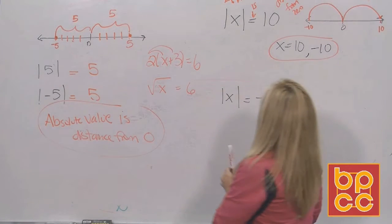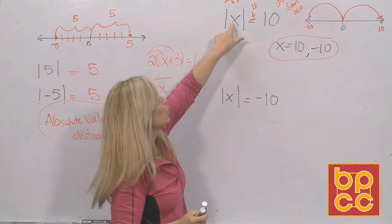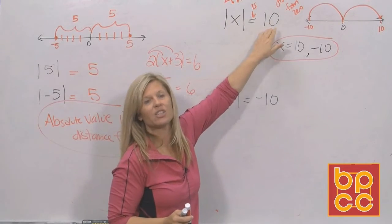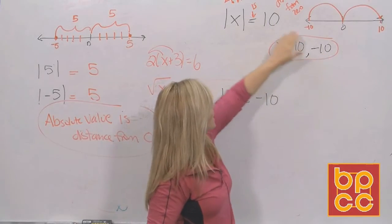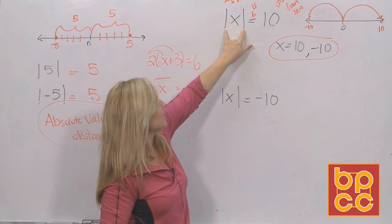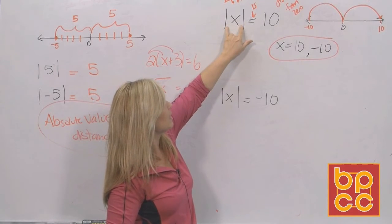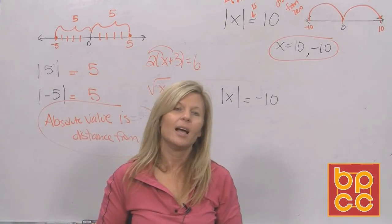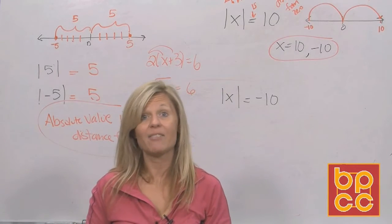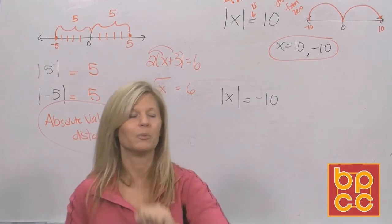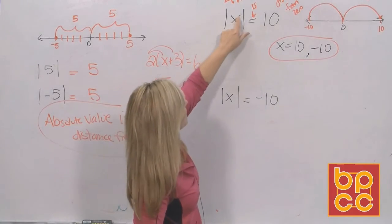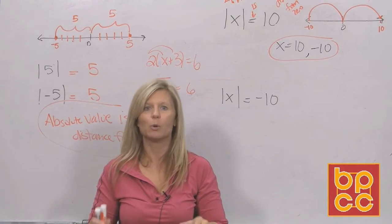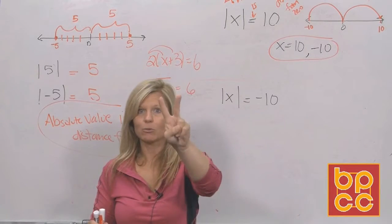Let's take positive 10 and put it into the absolute value bars — it comes out positive. It checks. If we take negative 10, the absolute value bars make it positive. It checks too. So now you've learned an important thing: absolute value equations can have two solutions. I know you'll say it's x to the first power — it's linear — but it's not a normal linear equation. It's an absolute value equation, and it can have two solutions.